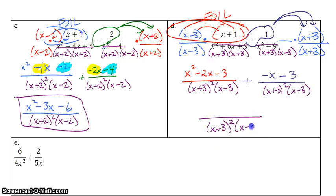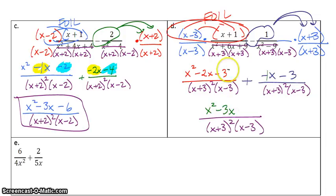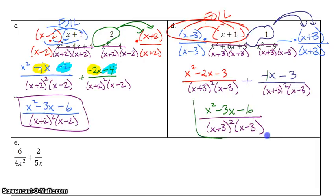Combine like terms on the top. I've got x squared. I've got negative 2x plus negative 1x, so negative 3x. Negative 3 plus negative 3 is negative 6. Very similar to our answer for c.